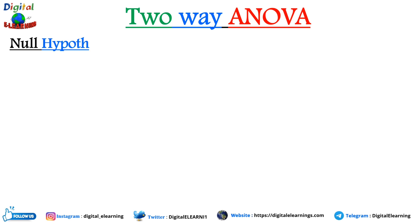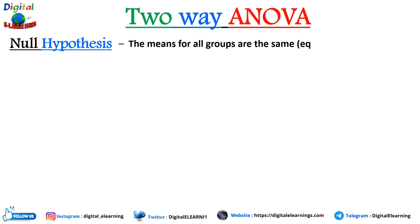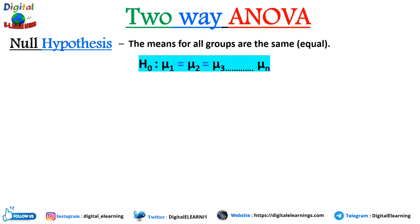Let's state the null and alternate hypotheses for two-way ANOVA. The null hypothesis H0 states that the means of all groups are the same or equal: mu1 = mu2 = mu3 = ... = mu_n.